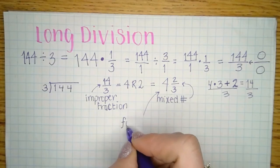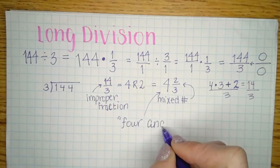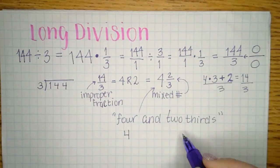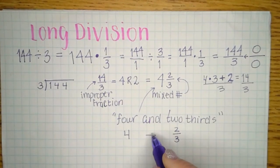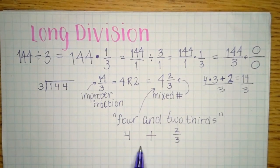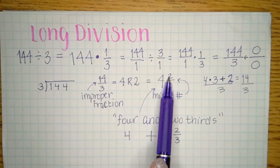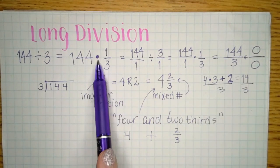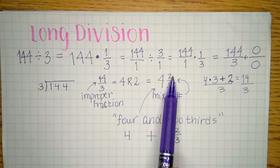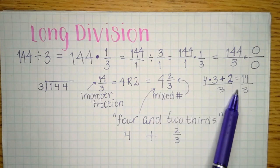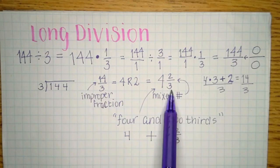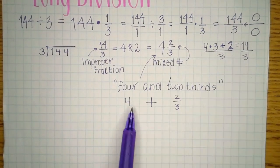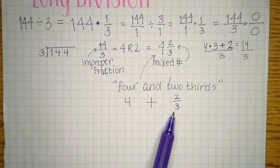You say '4 and two-thirds' — but in high school, 'and' means plus. I hate that they used to write it like a mixed number because in high school, when you put stuff next to each other you're usually multiplying. So sometimes students accidentally multiply and get eight-thirds instead of 14-thirds. That's why I always tell you to leave it as an improper fraction — that's where you mess up.